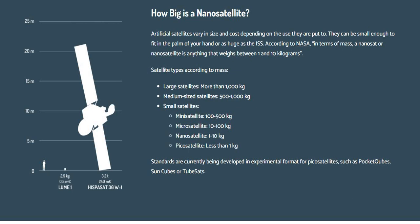How big are nano-satellites? Artificial satellites vary in size and cost depending on their use. They can be small enough to fit in the palm of your hand or as huge as the ISS. According to NASA, in terms of mass, a nano-satellite is anything that weighs between 1 and 10 kg. Satellite types by mass: large satellites — more than 1,000 kg; medium-sized satellites — 500 to 1,000 kg; small satellites including mini-satellites — 100 to 500 kg; micro-satellites — 10 to 100 kg; nano-satellites — 1 to 10 kg; pico-satellites — less than 1 kg.